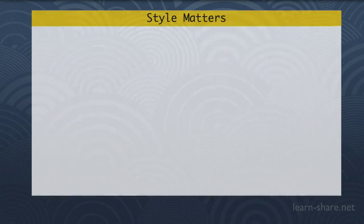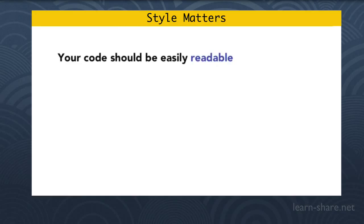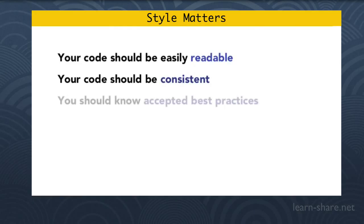Programming Style. The main points of style guidelines are: your code should be easily readable, should be consistent, and you should know and follow best practices. This means playing along with everyone else who is writing the same language, because it's going to make it easier to read example code and recognize when the code you're looking at is written well.